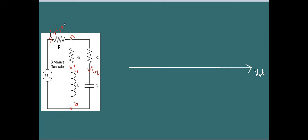I is equal to I1 plus I2. For I2, it's a capacitive circuit but not purely capacitive because it has a resistive element in it, so I2 will lead somewhere between 0 to 90 degrees. As we know, I leads in a capacitive circuit and I1 lags. So let this be I1 and this is I2.